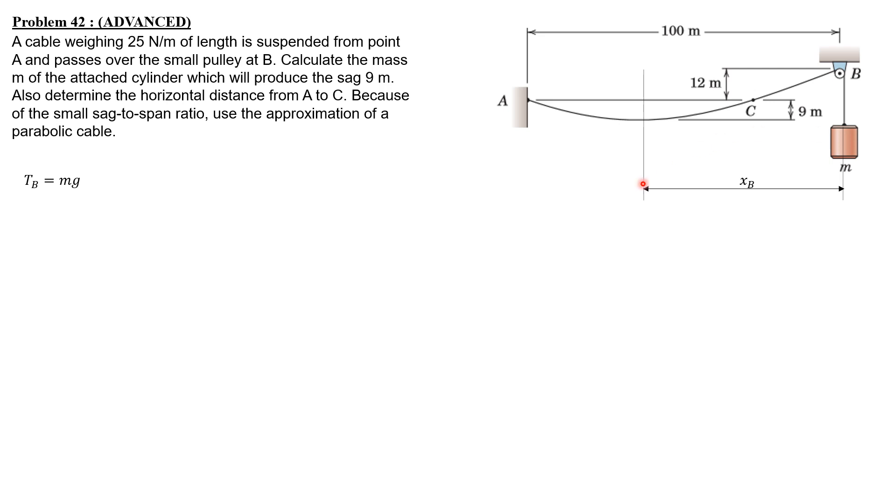By symmetry, points A and C are of the same elevation, so X_A equals X_C. The equation of the cable is Y equals W X squared over 2H, where H is the horizontal component of the tension in the cable.